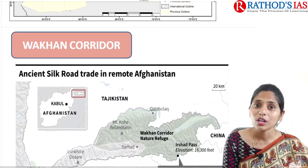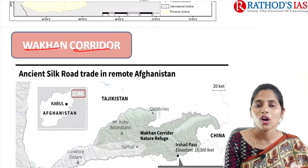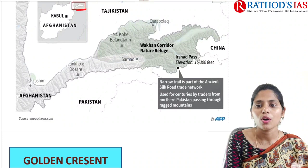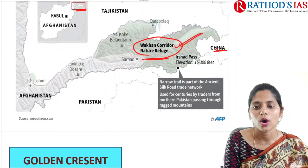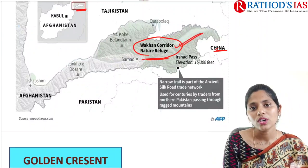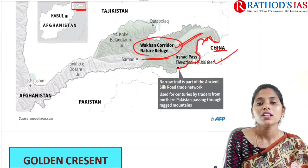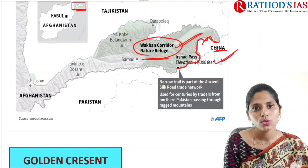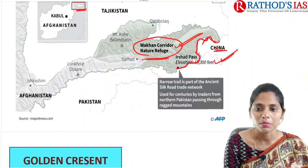One more important geographical place in Afghanistan is the Wakhan Corridor. Afghanistan shares a boundary with China through this narrow tail-like part. This region was earlier the old or ancient Silk Route of China, mainly used by traders from northern Pakistan passing through these rugged mountains.